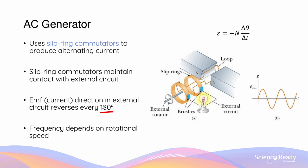Therefore, the frequency of the alternating current, AC, is proportional to the rotating speed of the coil. If the coil is made to rotate faster, then the frequency of the alternating current is also higher.